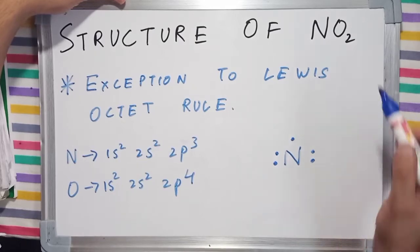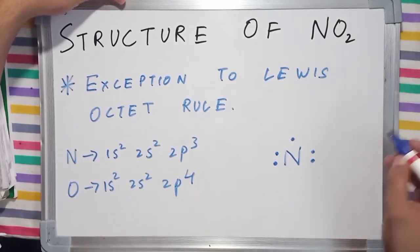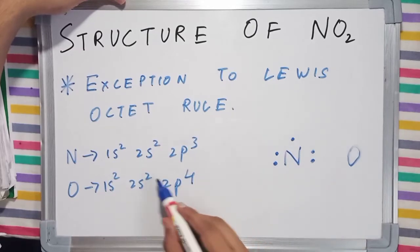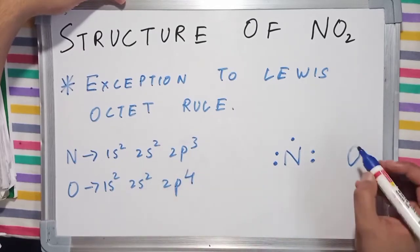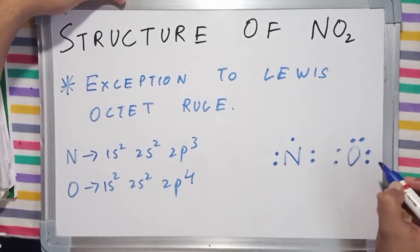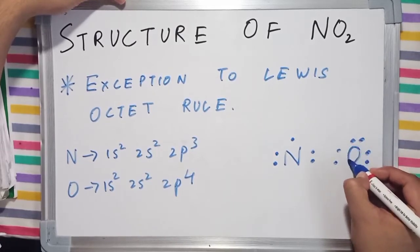We have got left 2 atoms of oxygen. And oxygen has 6 valence electrons: 2 plus 4, 6 valence electrons. 1, 2, 3, 4, 5, 6.